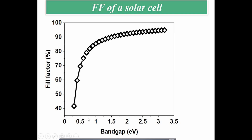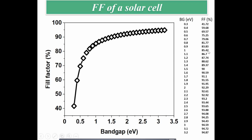For solar cells below 1 eV band gap, the fill factor is rapidly lower — below 80%. That is why we do not choose solar cells with low band gaps. Beyond 1 eV, fill factor is quite good and increases as band gap increases. At 1 eV band gap, fill factor is 85% and increases thereafter. For 0.3–0.6 eV band gap solar cells, fill factor values are much lower, leading to lower overall efficiency.